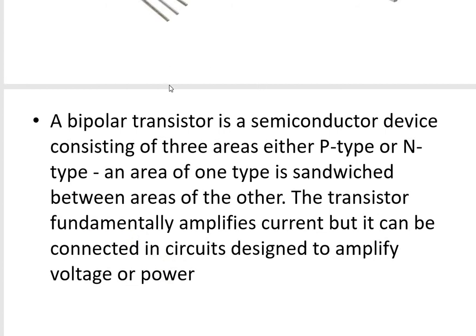We call the transistor a bipolar device because it uses both electrons and holes as charge carriers. It is a semiconductor device consisting of three areas — NPN: N region, P region, and again N region. In the case of a transistor, one P type is sandwiched between two N types, or one N type is sandwiched between two P types. Those are the basic transistor types: NPN and PNP.